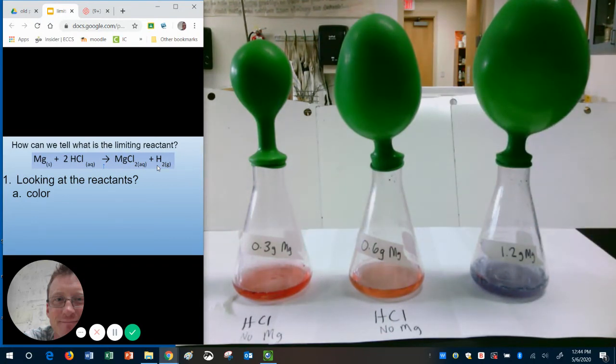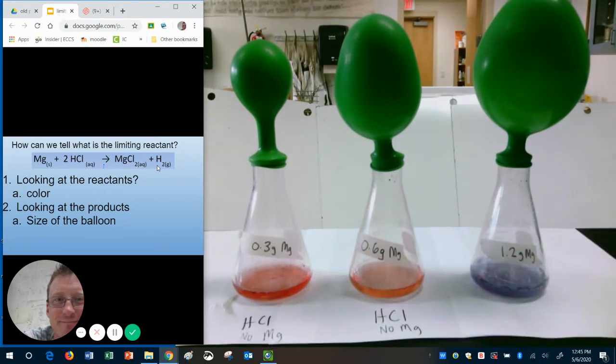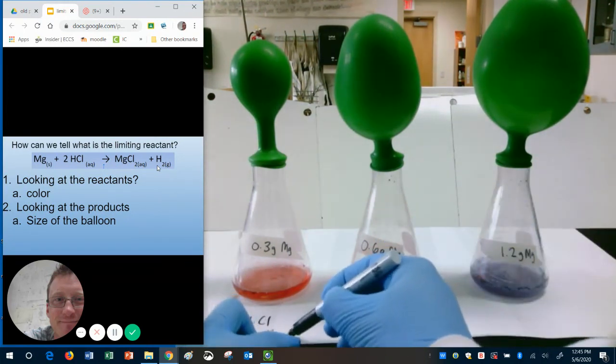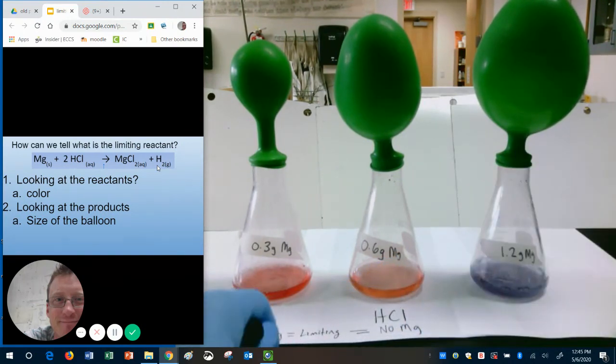Now, notice also the size of the balloon. We can also look at the products. Hydrogen is a gas. Well, looking at this, we can see that the amount of gas produced is different in all of these. And the reason for that is because more reactions happened.